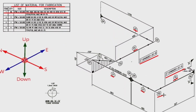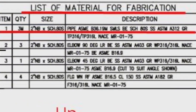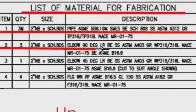Detail number two was used in one place in the pipe drawing. Detail number two: the quantity is three pieces, two inches, schedule 80S, elbow, 90 degree, long radius. The material is stainless steel.